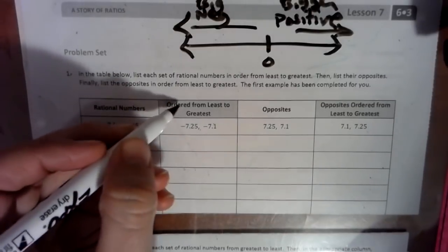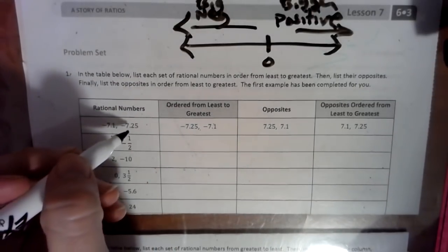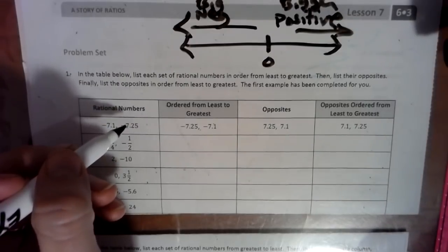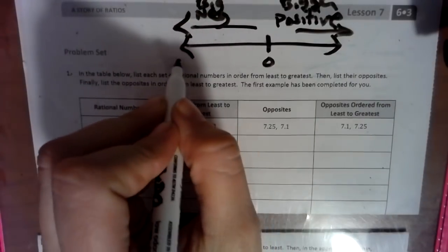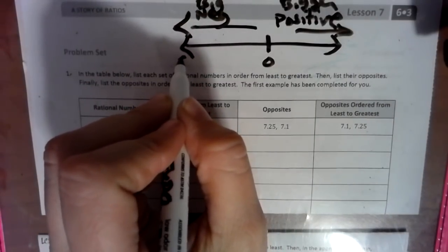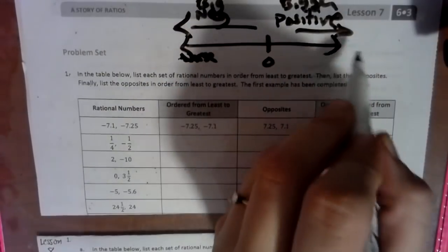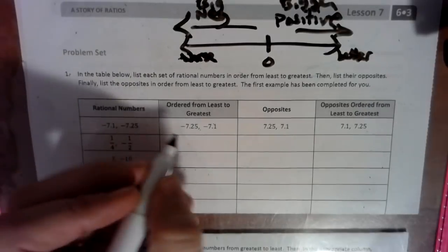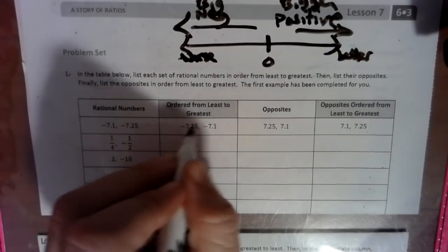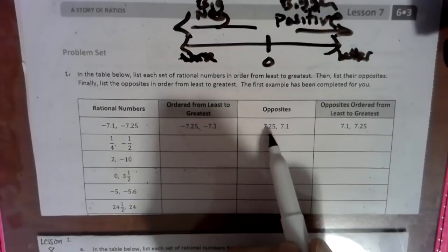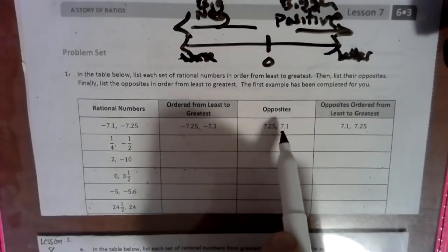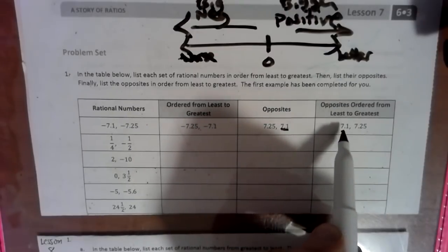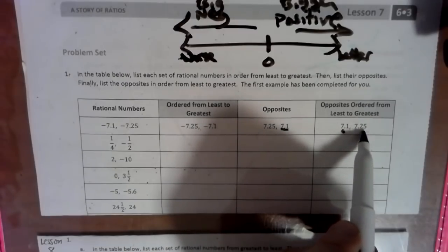If you look at this example, it says order from least to greatest. We have these two numbers — negative seven and twenty-five hundredths is a bigger negative, so it's worse. The farther we go this way, the smaller the value. And the way over here is the better it is. If we order their opposites, the opposites of these negatives are obviously the positives. Ordering them from least to greatest, the seven and one tenth is least compared to seven and twenty-five hundredths.